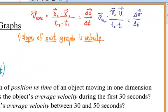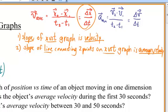Number one, the slope of an x versus t graph is velocity. You can see that from the delta notation definition of average velocity. And that leads us to number two. The slope of the line connecting two points on an x versus t graph is the average velocity. This second point is a corollary of the first.